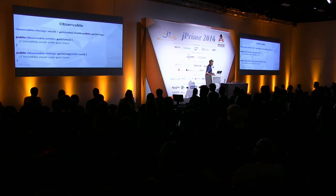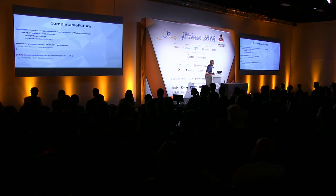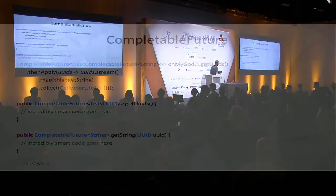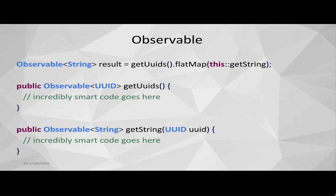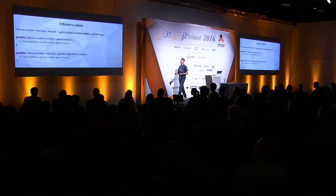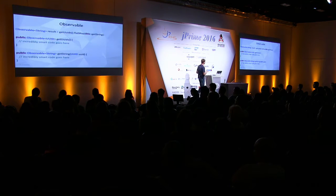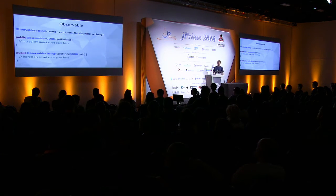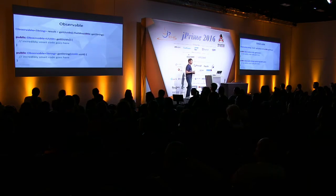First of all, you probably noticed that with CompletableFuture we are emitting a list of something, but here with Observable, even though the code is doing the same thing, we just have Observable of String. That's because Observables completely don't care about how many items they are emitting. The type is only telling you about what kind of type it will emit, but not how many items. So there is a possibility this stream will not emit even a single string, and there is a possibility this will be an actually infinite stream.